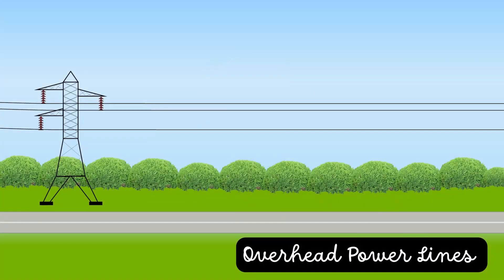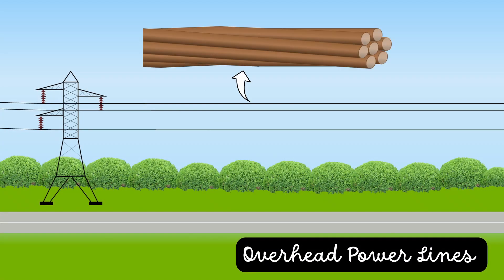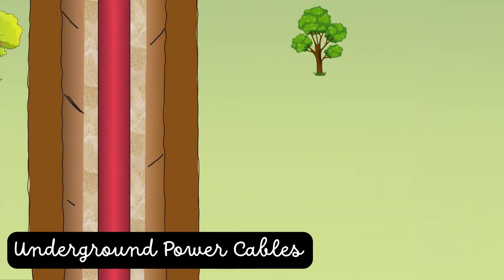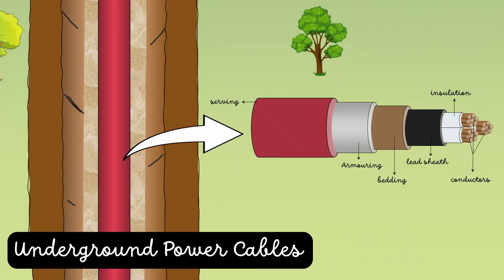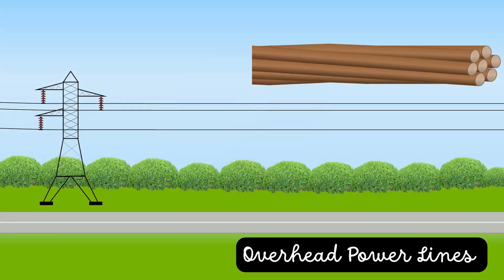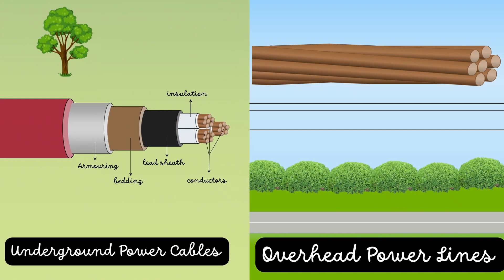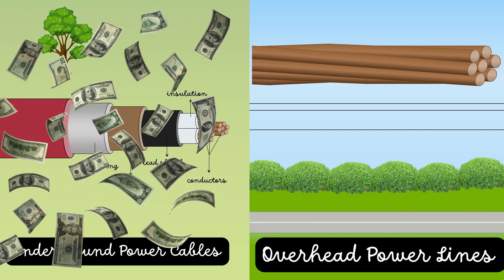In overhead power lines, bare conductors are used. While in underground power cables, the conductors are wrapped with insulation, metallic sheet, armoring and serving. Just compare the construction of overhead power lines and underground power cables — it is very clear that underground power cables are more expensive than the overhead power lines.